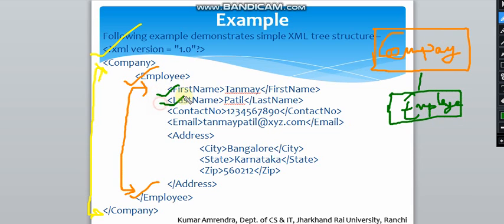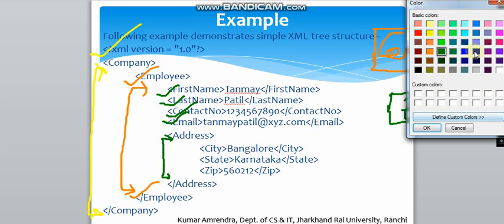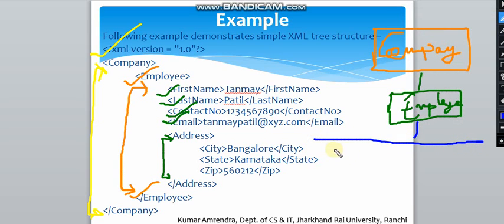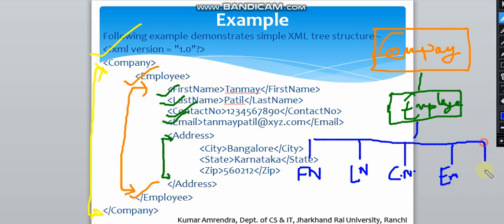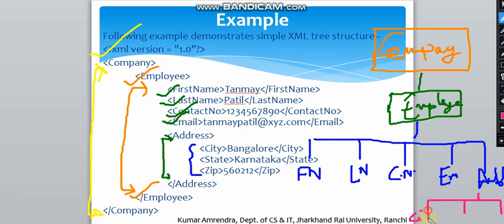Inside the employee element I have five different types of tags — five child elements. The first one is first name, after that last name, the third one is contact number, then email id, and finally address. Now inside the address I have three more sub-elements: city, state, and zip — that is the pin code. So this is the structure of the XML code.